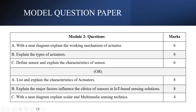Next, the OR choices. List and explain the characteristics of architecture, where you will be listing the types of architecture and also specifying the characteristics of architecture. Total mark weightage is 8 marks.